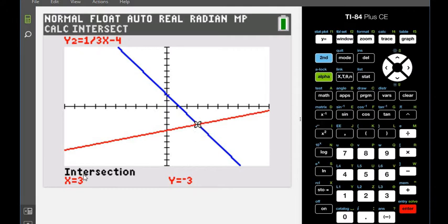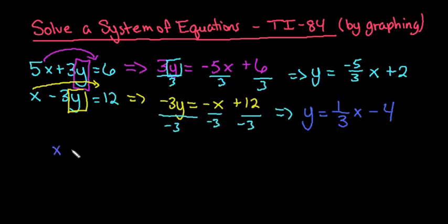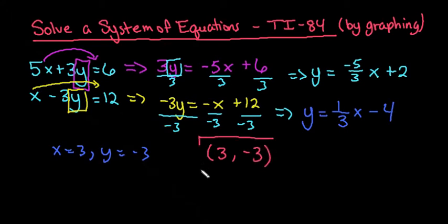And it tells us our intersection is x equals 3, y equals negative 3. So that would be our answer. x equals 3 and y equals negative 3 would be our answer from our graph. So if we had to write it as an ordered pair, we would say (3, -3) would be our solution.